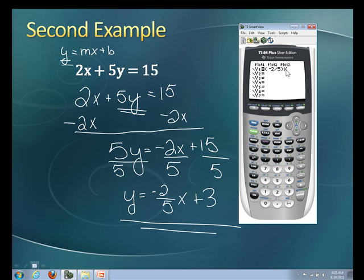Now it's really important that the x is outside of the parentheses. And then finally we have plus 3. The last thing we're going to do is hit graph. And here it is. Here's the graph of the equation 2x plus 5y equals 15. Great!